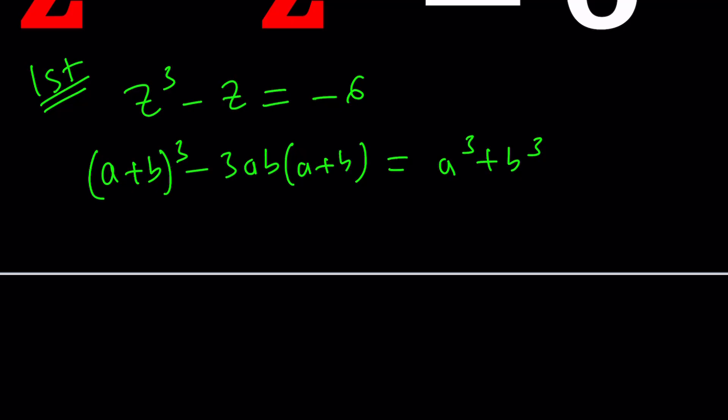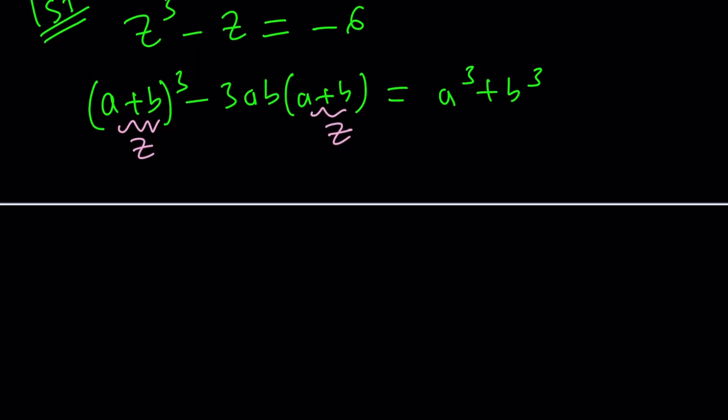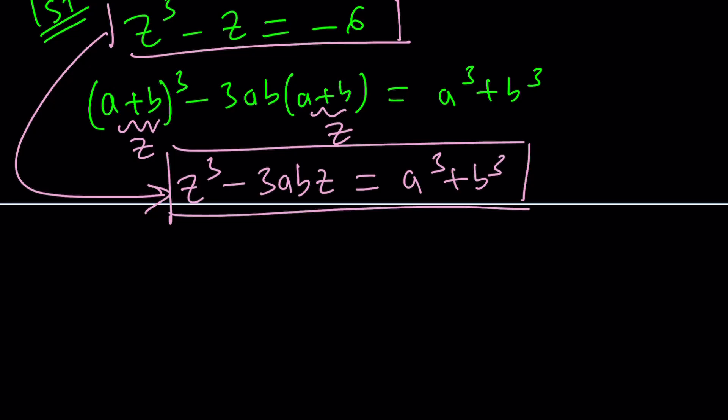This identity allows us to solve cubic equations, especially the ones that are depressed like this. If you set A plus B equal to z, then A plus B becomes a solution of this equation which is in z. If this is our equation, we can set the coefficients equal to each other and compare them, and that way we're going to get the values of A and B.